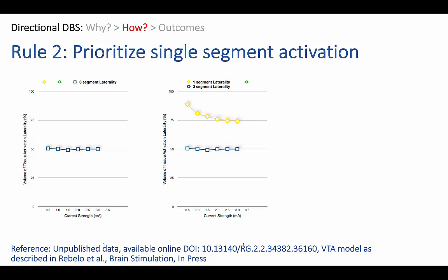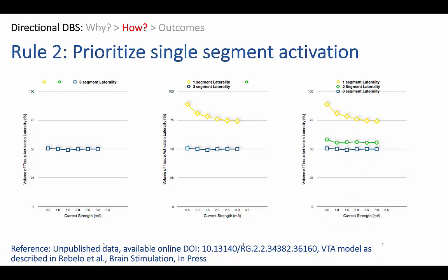Rule two is to prioritize single segment activation. For omnidirectional stimulation, there is no laterality — 50% of the volume of tissue activated is in one hemifield and 50% is in the other. With activating a single segment, you get a high degree of laterality to start with, which falls as you increase current strength. The surprise comes when you examine what happens with two segments: when you activate two segments, you activate most of the circumference of the lead, and as you increase current strength, the electric field leaks further into the opposite hemifield and you get very little laterality. So to maximize directional field restriction, you activate one segment at a time.